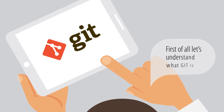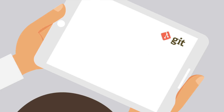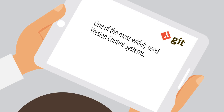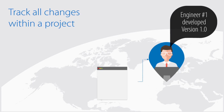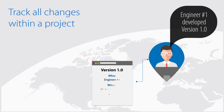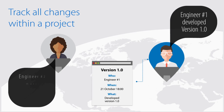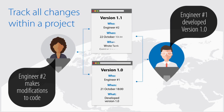Let's understand what Git is. One of the most widely used open source version control systems. Track all changes in the project and be able to know who, when, and what.